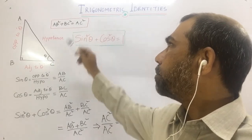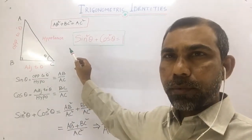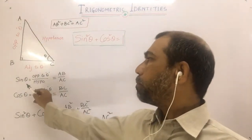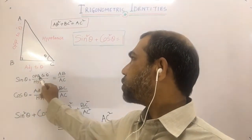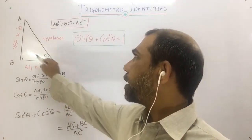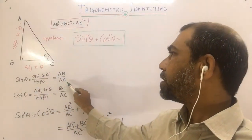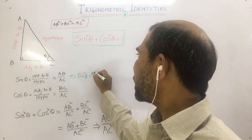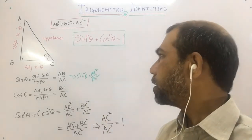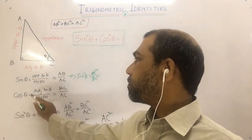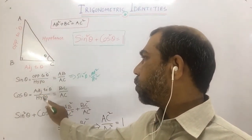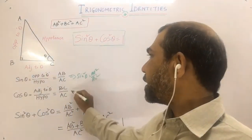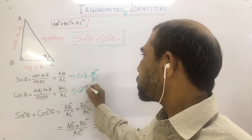Using the Pythagoras theorem, we can prove the first identity: sin²θ + cos²θ = 1. From the basic definition, sin θ = opposite/hypotenuse = AB/AC, so sin²θ = AB²/AC². For cos θ, it is adjacent/hypotenuse = BC/AC.